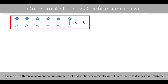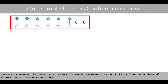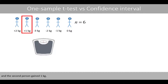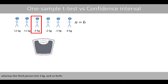To explain the difference between the one-sample t-test and confidence intervals, we'll have a look at a simple example. Let's say that we would like to investigate the effect of a new diet. We recruit six random individuals from the population of interest that test the new diet for four weeks. The first person gained two kilos, the second gained one kilo, whereas the third person lost three kilos, and so forth.